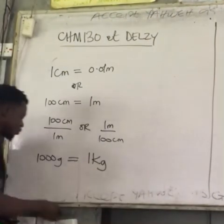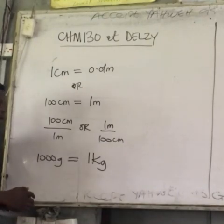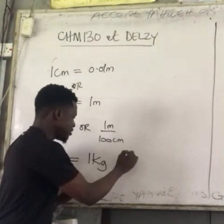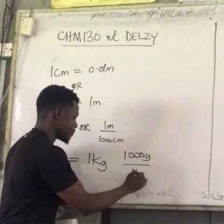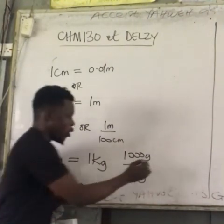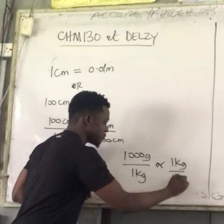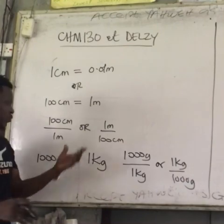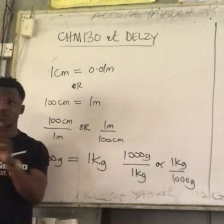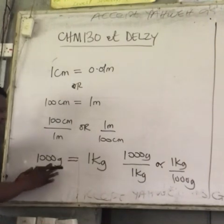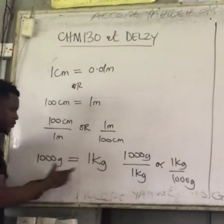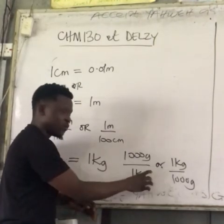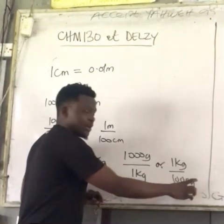This relationship relates grams and kilograms. I can express it as a conversion factor: 1,000 grams over 1 kilogram, or 1 kilogram over 1,000 grams. I want us to really understand how to express a relationship as a conversion factor — for every 1,000 grams we have 1 kilogram, or for every 1 kilogram we have 1,000 grams.